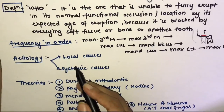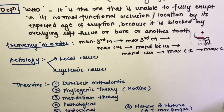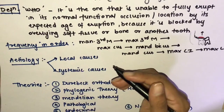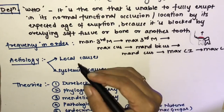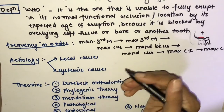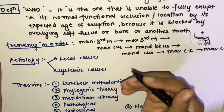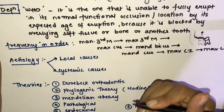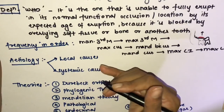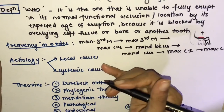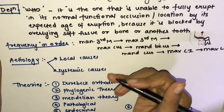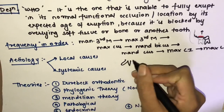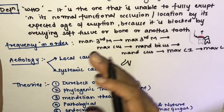The etiology of impaction includes local and systemic causes. Local causes include: first, lack of space due to underdeveloped jaws; second, obstruction from soft tissue or hard tissue; and third, retained deciduous teeth, which can be an etiological factor for impaction.